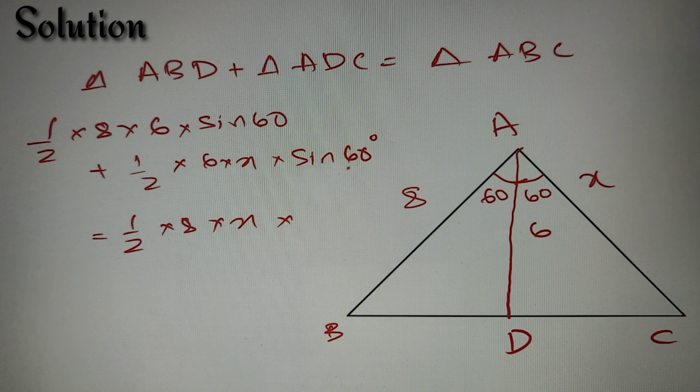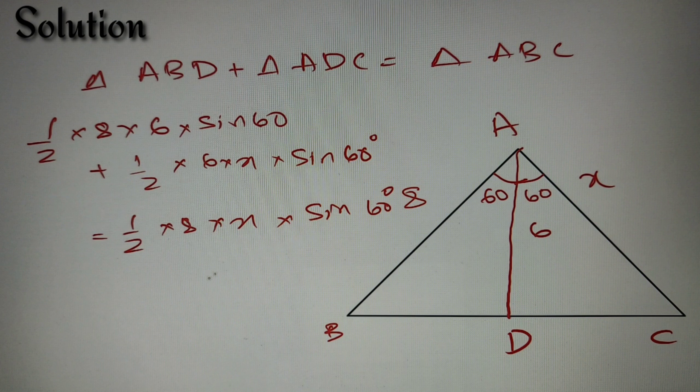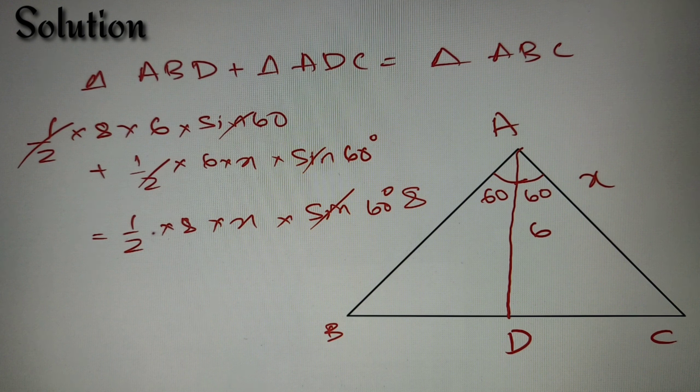Now we know that sine 120 degrees is equal to sine 60 degrees, so we'll again write it as sine 60 degrees. Now we can cancel sine 60 from all three parts and we can also cancel half from all three parts.